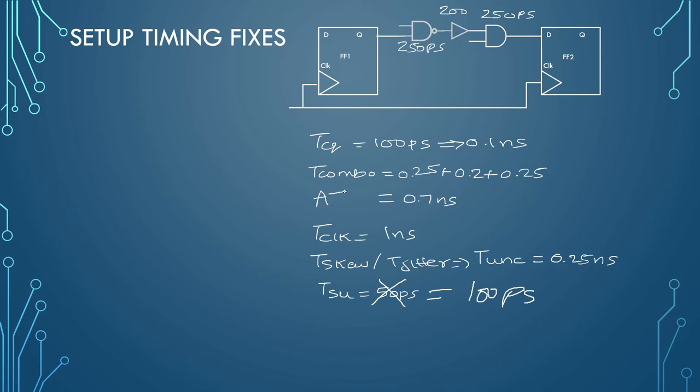Now with that in mind, arrival time here will be this much, which is a combination of Tcq plus Tcombo. We have already explained this in previous videos and the link is given in the description below. Now setup time is also 100 PS. With this calculation, you can calculate your required time. So required time will be around 1 minus 0.25, that is your uncertainty portion, and your library setup time which is 0.1. So that will come down to about 0.65 nanoseconds.